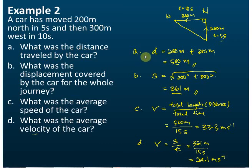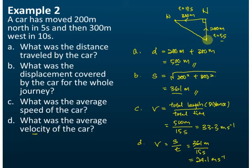For example two, we are not yet complete. We already got the answers for A, B, C, and D — so why are we not complete? Remember, displacement is a vector quantity, and so is velocity. Therefore, we need to tell the directions of these quantities. For parts B and D, we need to tell the directions. Let's measure the direction from the north, and label it with theta.